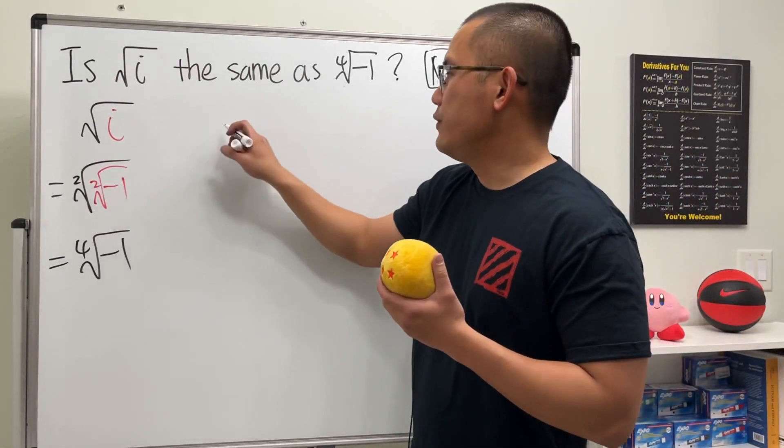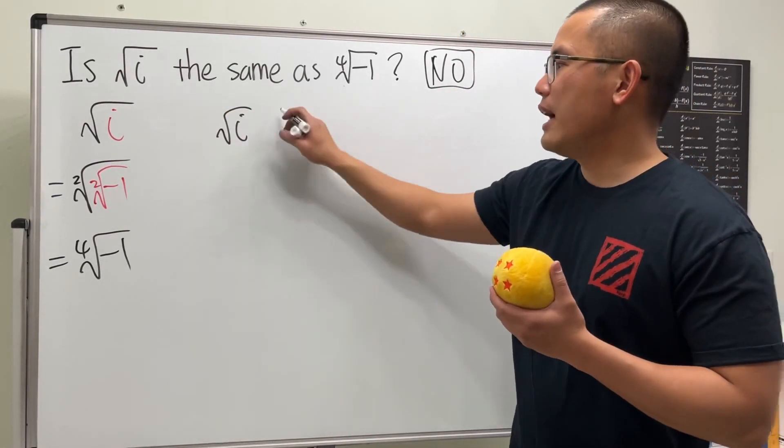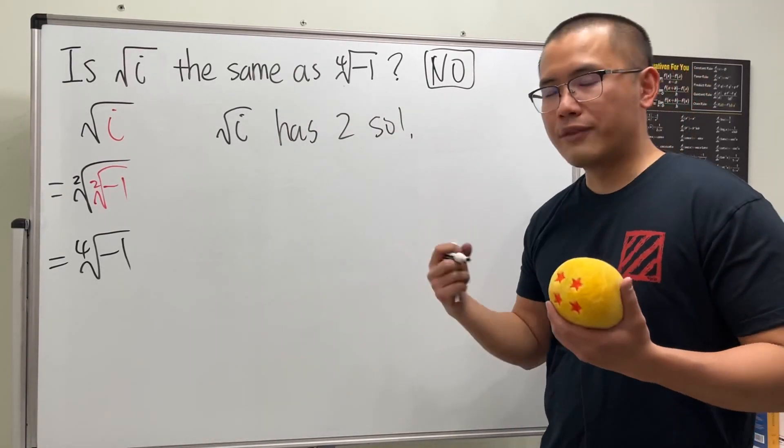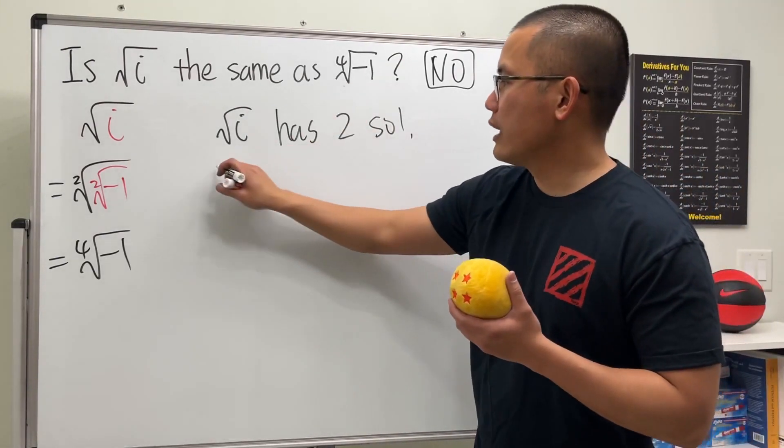Let me tell you what I mean by that. If you take a look at square root of i, this guy actually has two solutions. We have two solutions for square root of i.